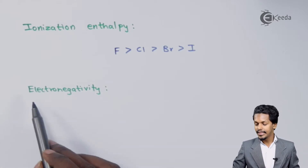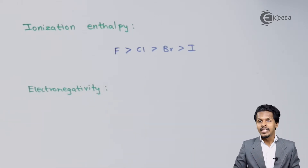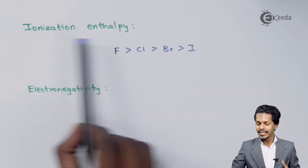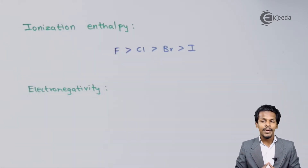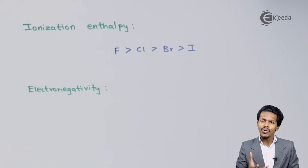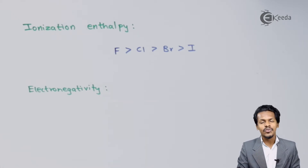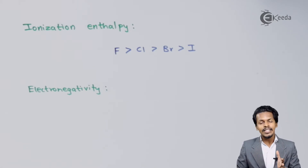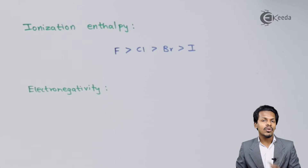The trend in electronegativity is similar to that of ionization enthalpy. Electronegativity is the tendency of an atom to attract electrons toward itself in a bonded molecule.